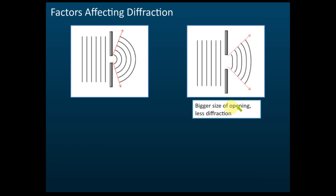The second factor: the wavelength is the same but the size of the opening is different — one is small, the other is bigger. We found that if the size of the opening is smaller, the angle of diffraction is bigger. So a bigger size of the opening means less diffraction.